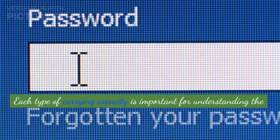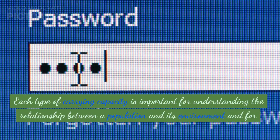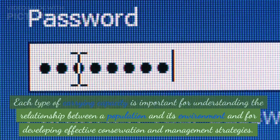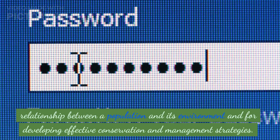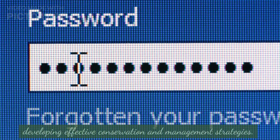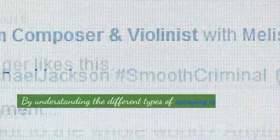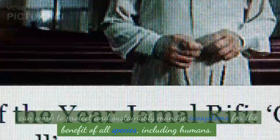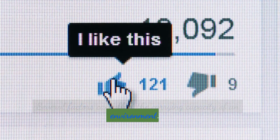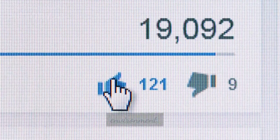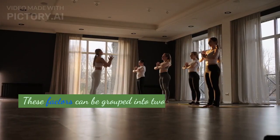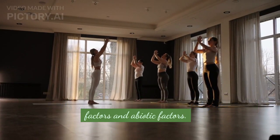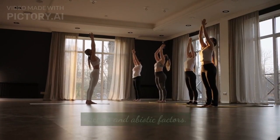Each type of carrying capacity is important for understanding the relationship between a population and its environment and for developing effective conservation and management strategies. By understanding the different types of carrying capacity, we can work to protect and sustainably manage ecosystems for the benefit of all species, including humans. Several factors can affect the carrying capacity of an environment. These factors can be grouped into two broad categories: biotic factors and abiotic factors.